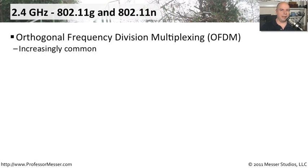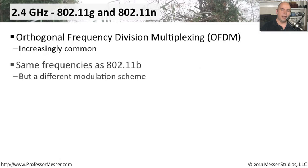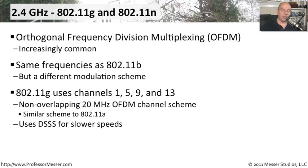For 802.11g and 802.11n running at the 2.4 GHz frequency range, those are also using OFDM modulation, very similar to 802.11a. They use the same frequencies as 802.11b, but because this is a different modulation scheme, traffic is sent in a different way. In 802.11g, we generally use channels 1, 5, 9, and 13. These channels are 20 MHz wide. If speeds drop to 1 Mbps, it falls back to DSSS modulation like 802.11b, so g and n can use different modulation types depending on the speeds involved.